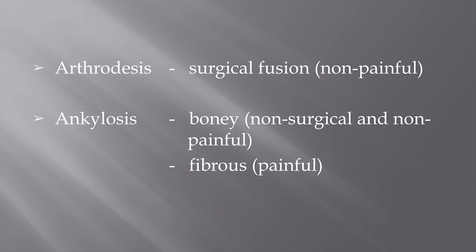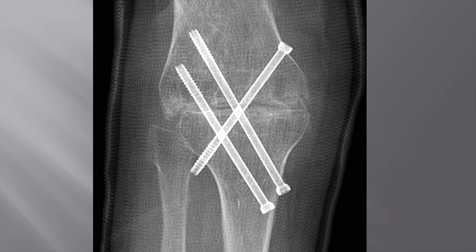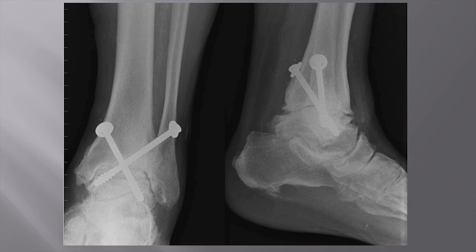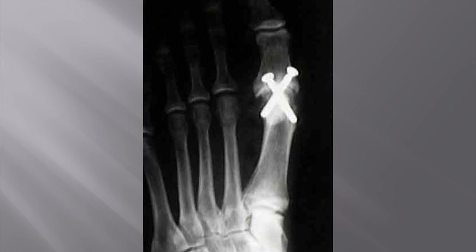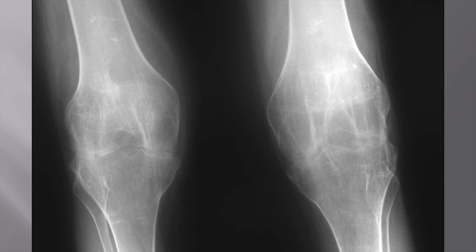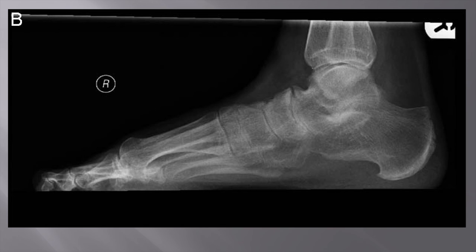Here are some examples of arthrodesis — of the knee, of the ankle, a triple fusion, and of the MP joint of the great toe. A couple of examples of bony ankylosis here are both knees with no evidence of internal fixation, where one can see the bony trabeculae extending across the joint. And a bony ankylosis of the subtalar joint, again with bony trabeculae extending across the joint.